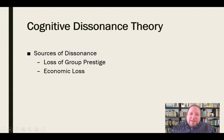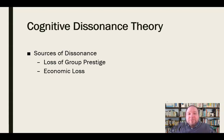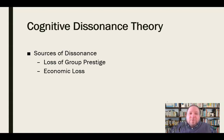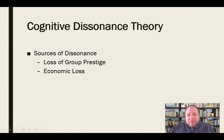Another source of dissonance is economic loss. This happens a lot in politics: people are told they're going to lose their jobs, that all the jobs are going to China or Mexico or wherever, creating this panic about economic loss. If this person's elected, the debt will quadruple and it will affect interest rates. We create this dissonance — that's not what we want — and there are people who do that intentionally.